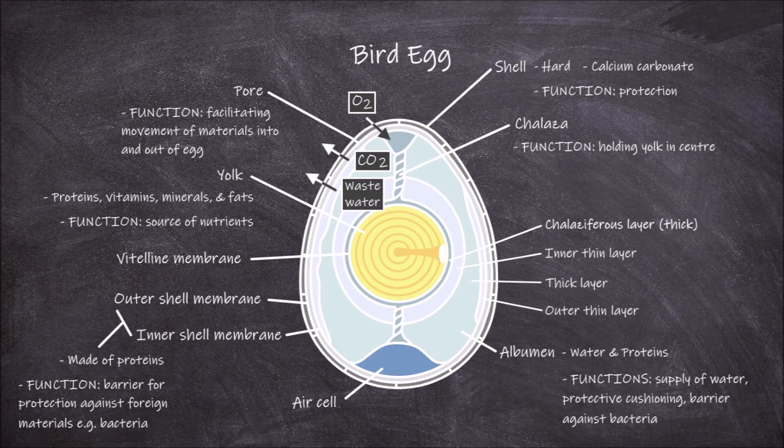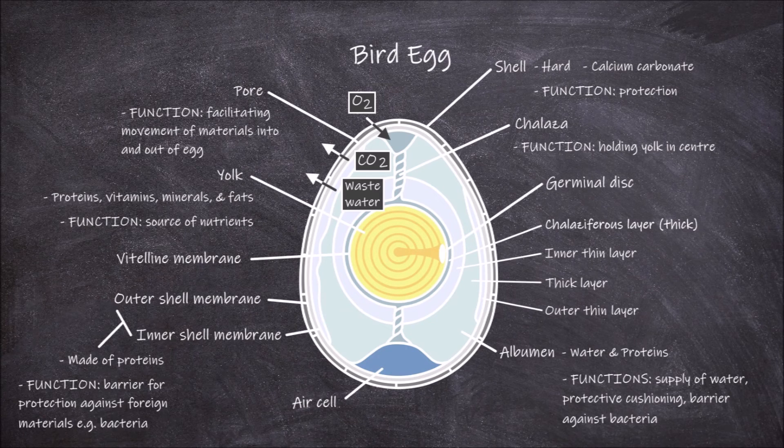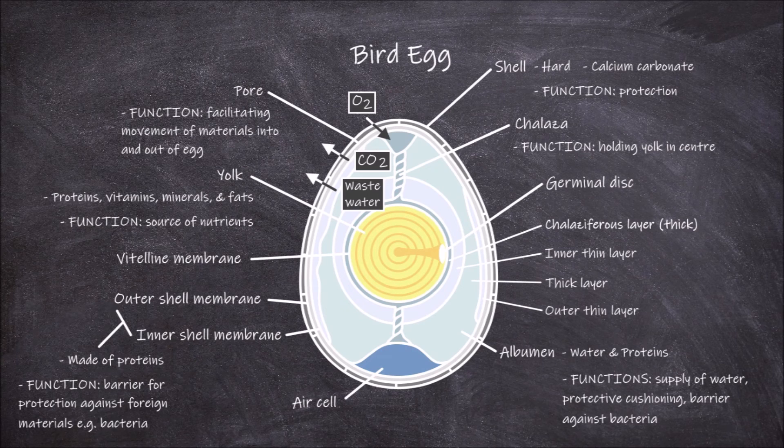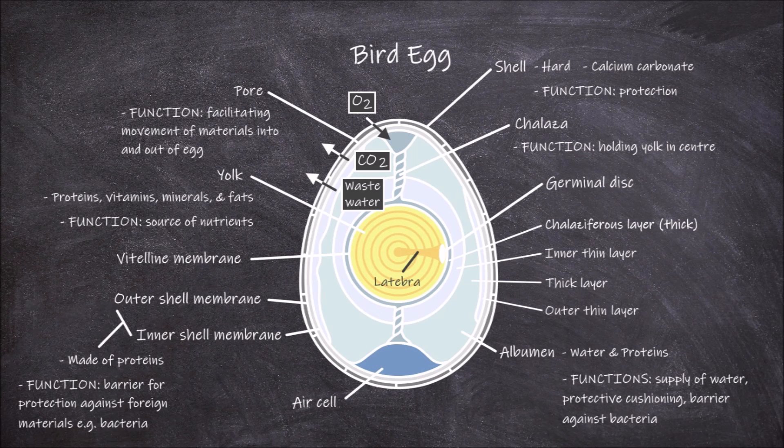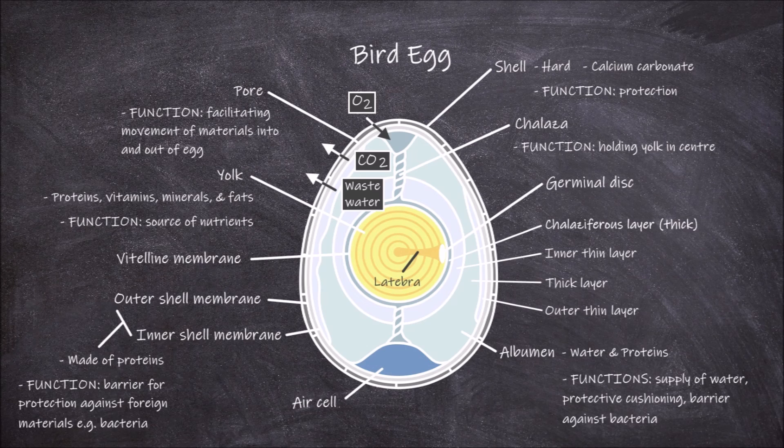On the surface of the yolk is a small circular white spot known as the germinal disc. The lattebra, which is a column of white yolk, connects the germinal disc to the center of the yolk. The germinal disc is where fertilization occurs. If the germinal disc is fertilized, it is called the blastoderm and is where the embryo starts to develop.